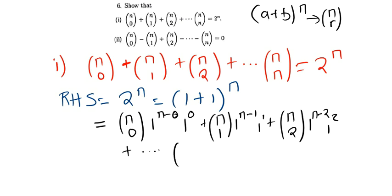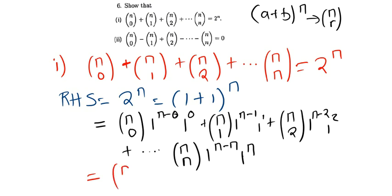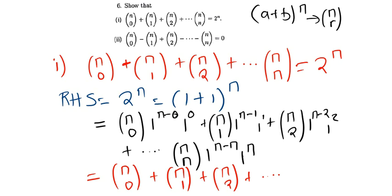The final term is n choose n, times 1^(n−n), times 1^n. Since 1 raised to any power remains 1, all the 1-terms simplify, and we are left with n choose 0, plus n choose 1, plus n choose 2, continuing up to n choose n.